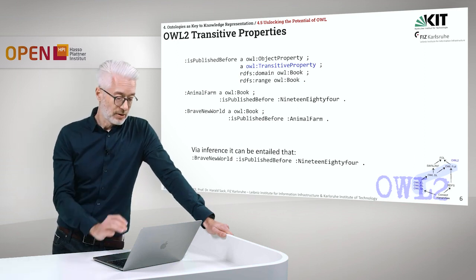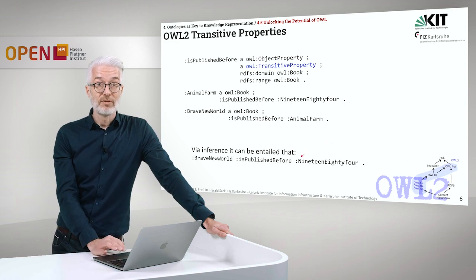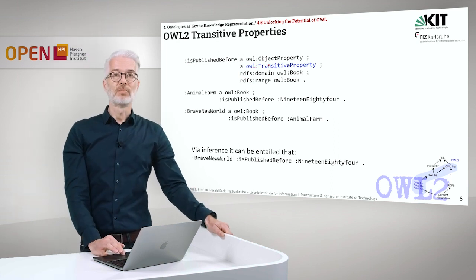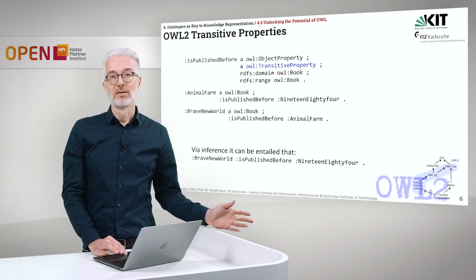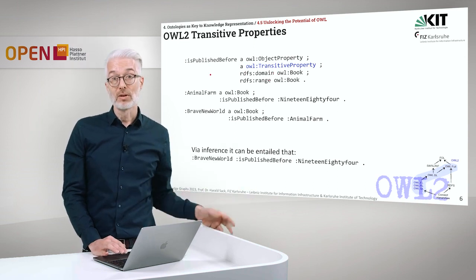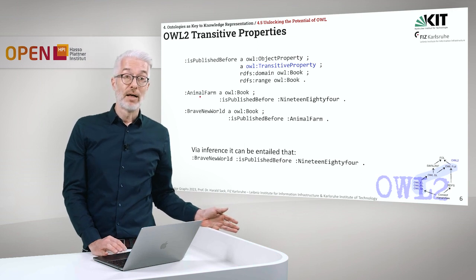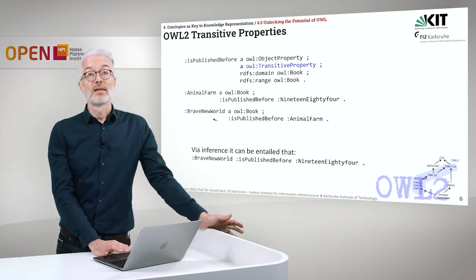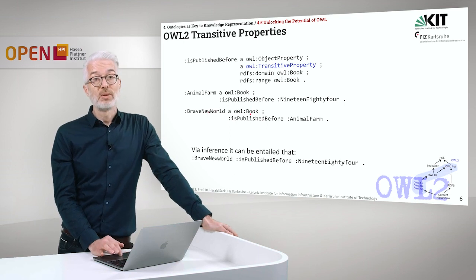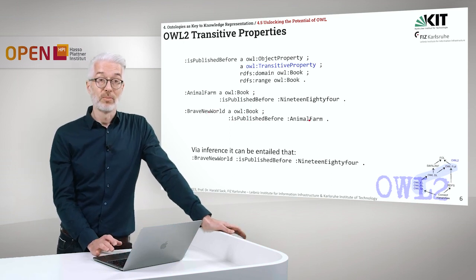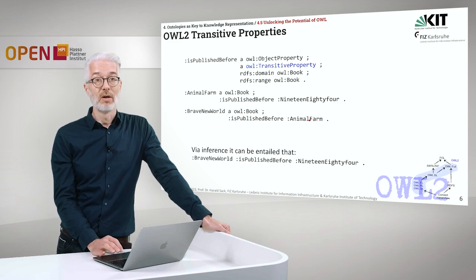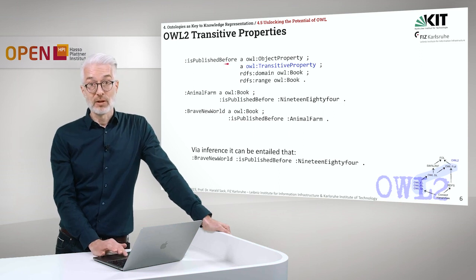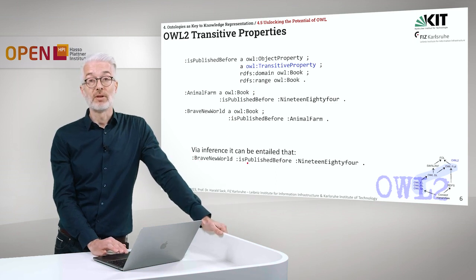Let's have a look at a specific example, starting with transitive properties. I have chosen the example of 'is published before' — an object property declared to be a transitive property on the domain and range of books. I declare that Animal Farm is a book published before 1984, and Brave New World is a book published before Animal Farm. Since 'published before' is transitive, I can automatically, via inference, entail that Brave New World has also been published before 1984.